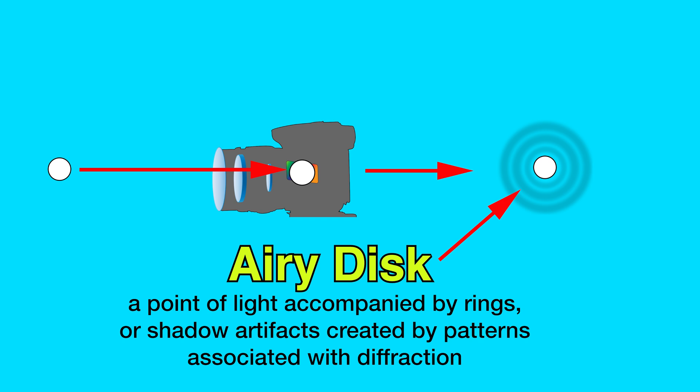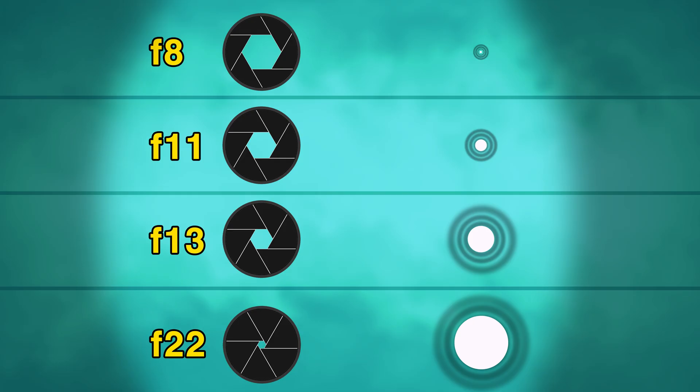One of the problems with airy disks is that as we continue to stop our aperture down, the airy disk, including those halo rings, grows in size and proportion. And when we're shooting many airy disks together, we have the problem of these rings and these halos overlapping, and at some point they begin to merge.